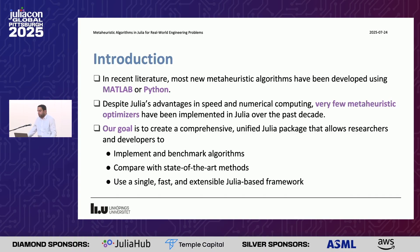Our motivation: in recent literature, most new metaheuristic algorithms have been developed using either MATLAB or Python. For myself, I have developed six or seven algorithms using MATLAB and have also enhanced many optimization algorithms written in Python. Despite Julia's advantages in speed and numerical computing, very few metaheuristics have been implemented in Julia. Our goal is to create a comprehensive unified Julia package that allows researchers and developers to implement and benchmark algorithms, comparing them with state-of-the-art and competition winners using a simple, fast, and extendable Julia-based framework.